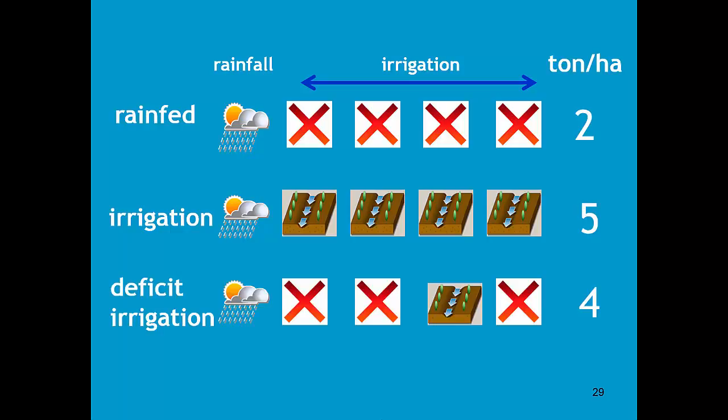Now, deficit irrigation consists in not fulfilling completely the net irrigation requirement. So there are periods of stresses where irrigation is not applied. Although in very sensitive periods, we go for full irrigation. But as a consequence of that water stress, we will have a smaller crop which transpires less and which produces less, let's say 4 tons per hectare.